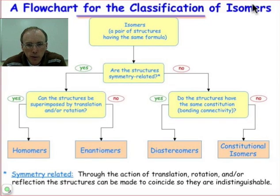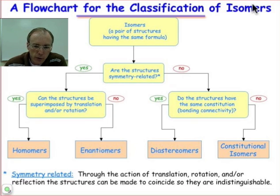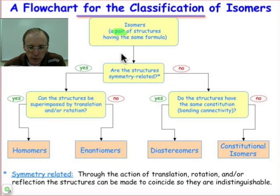Once we understand that a pair of structures are not the same — that is, that they're isomers — we'd like to know how those isomers are related to one another. This flowchart is a convenient way to systematically identify the relationship of some pair of molecules. We're making a comparison between a pair of isomeric structures.